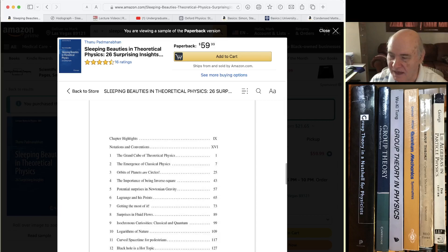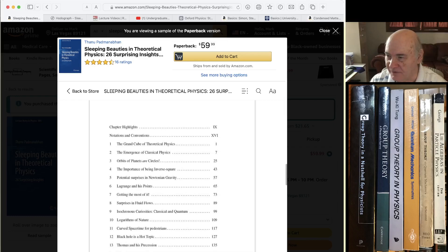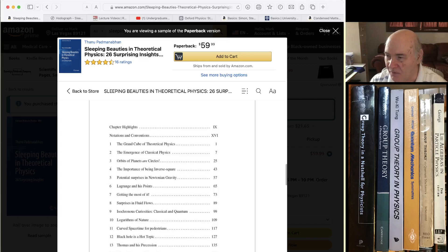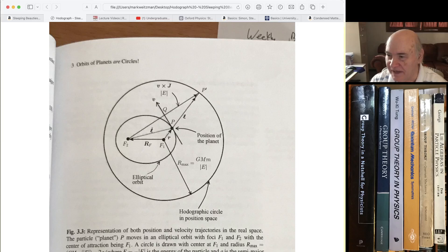In the next chapter, the importance of being inverse square, they cover the quantum aspects of it with scattering and everything. Why inverse square is so unique. But the orbits of planets circles are interesting and they cover very thoroughly what's called the hodograph.